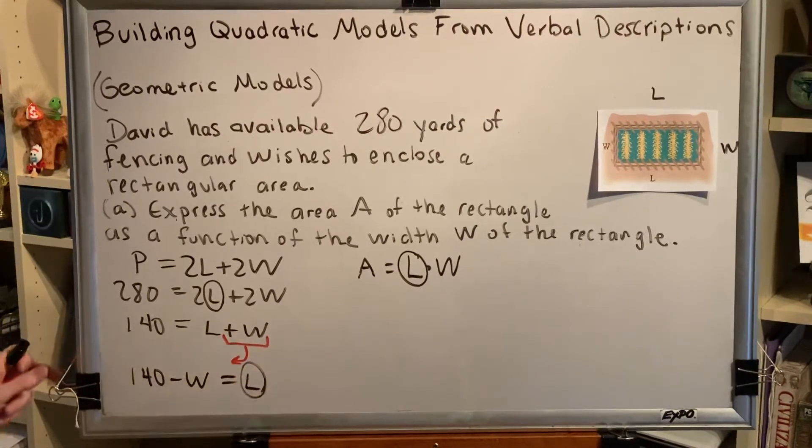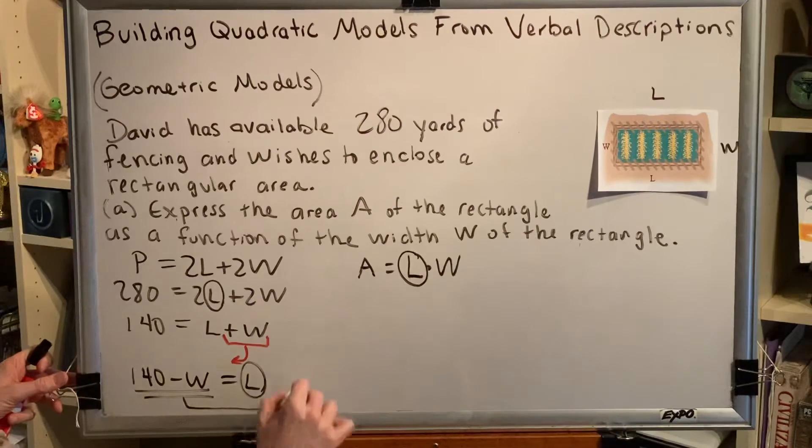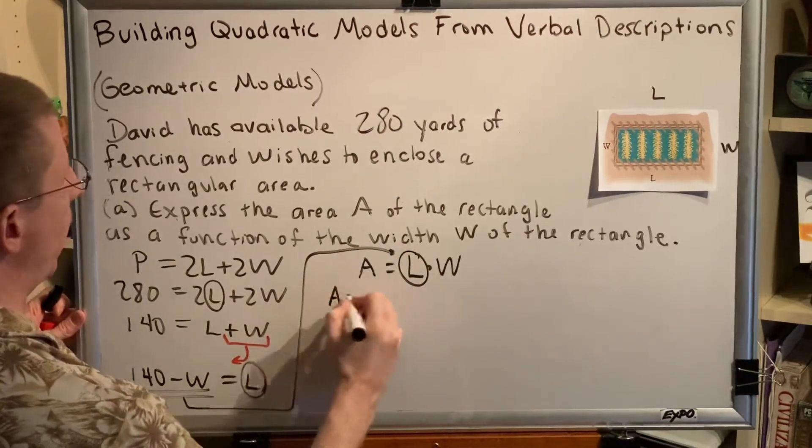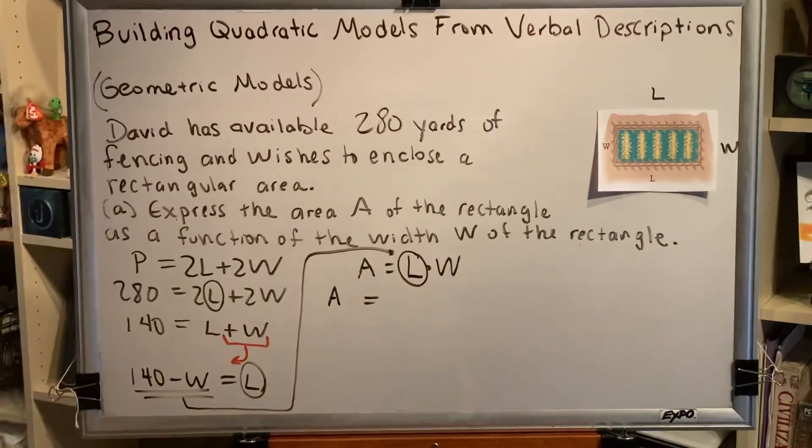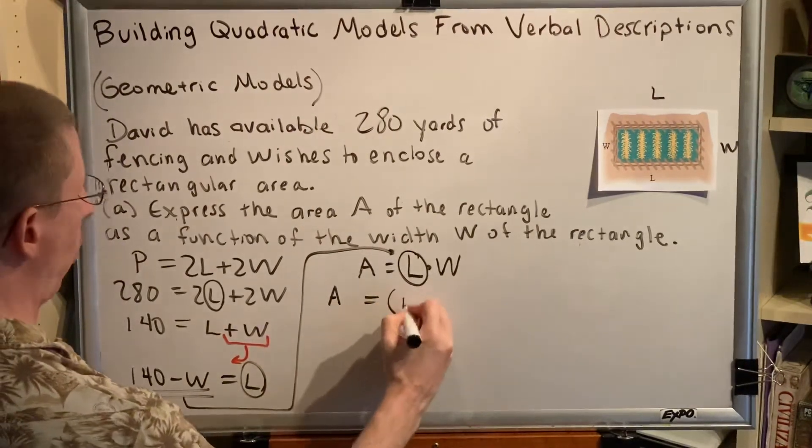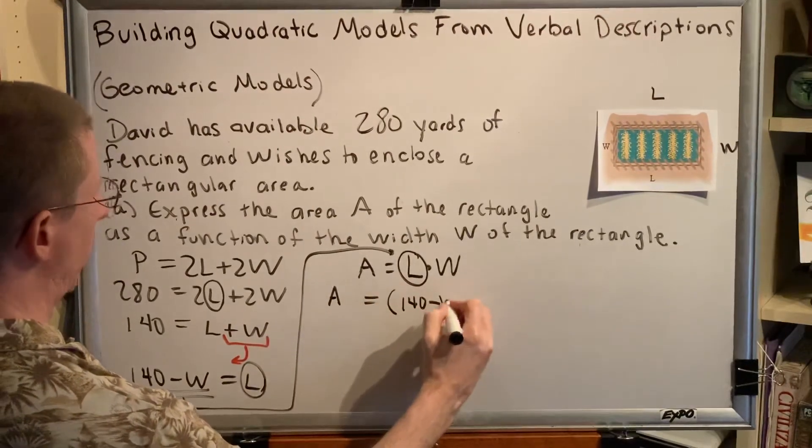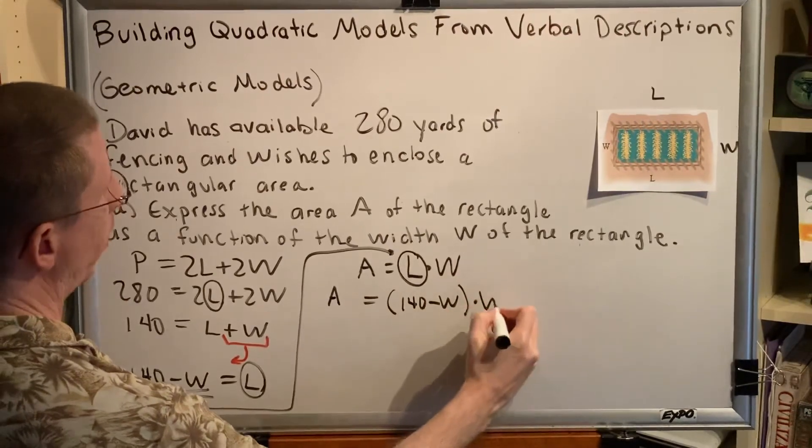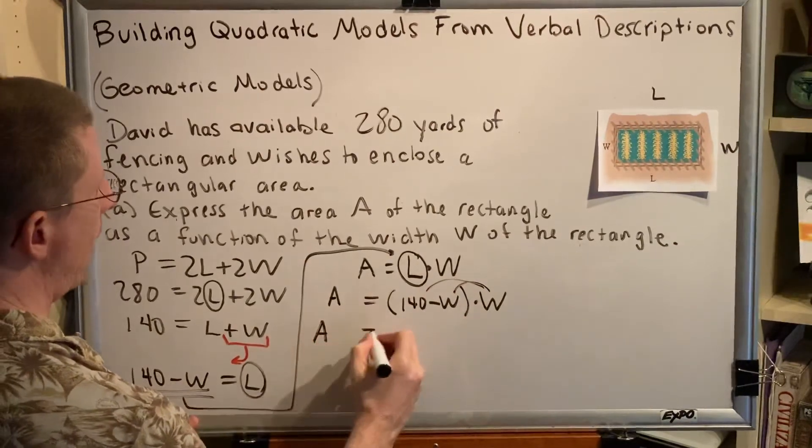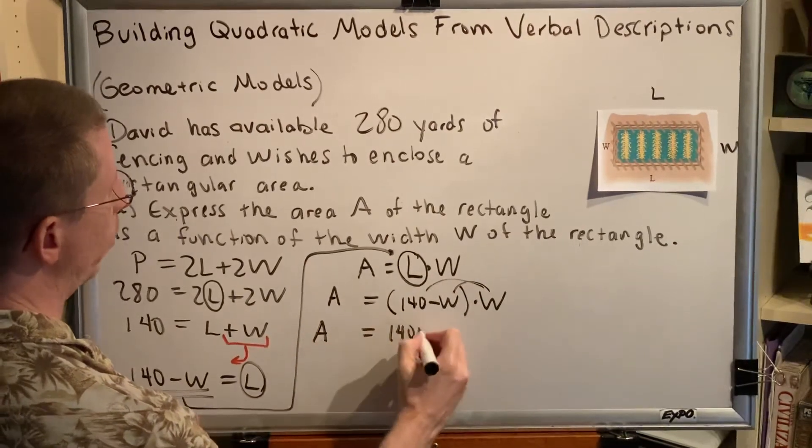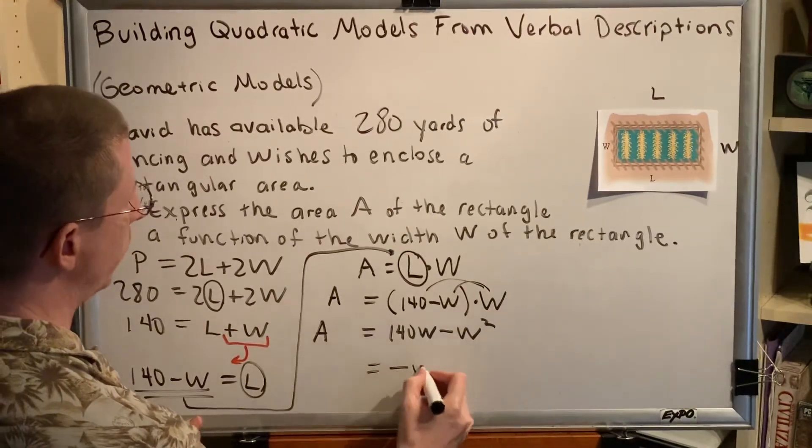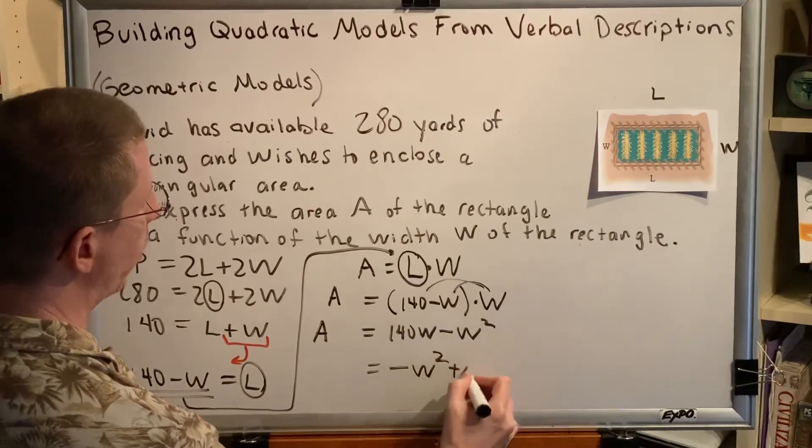Now we know what L equals, so we can take this expression and put it here. Then we won't have an L in our equation anymore, and the only letters we'll have will be A and W. So the L is being replaced by 140 minus W. The W is, of course, still here multiplying. We can distribute this W if we would like. So we'll get A equals 140W minus W squared. We can even put these terms in descending order, which would be negative W squared plus 140W.